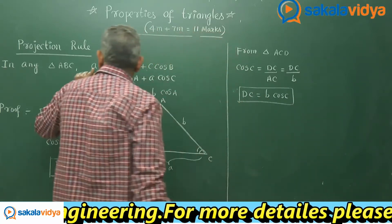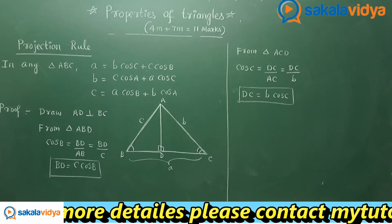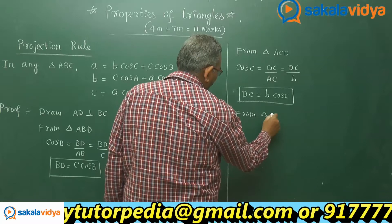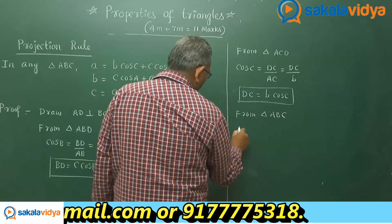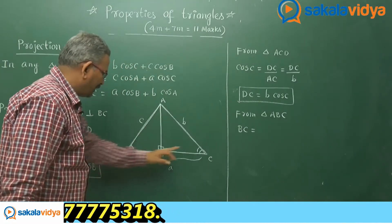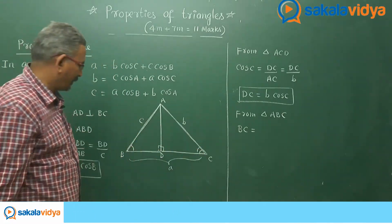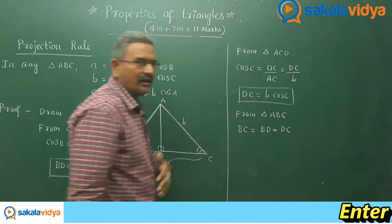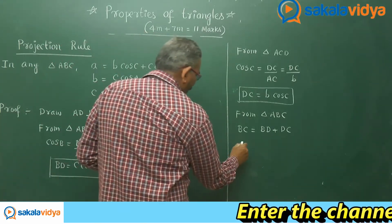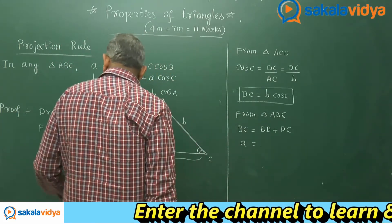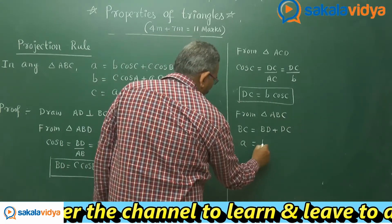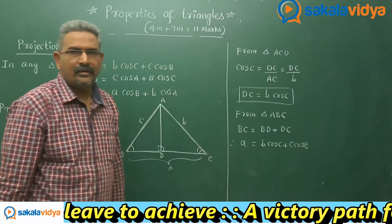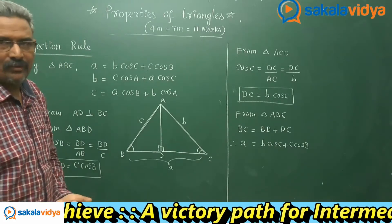So what is our aim? To find out a. From triangle ABC, BC equals BD plus DC — two segments. Replacing the respective values: BC is a, BD is c·cos B, and DC is b·cos C. So a equals c·cos B plus b·cos C. This is proved.